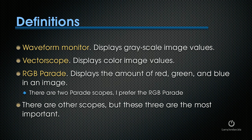There are three principal scopes inside Premiere: the waveform monitor, the vectorscope, and the RGB parade. The waveform monitor displays grayscale image values. The vectorscope displays color image values. In order to accurately analyze a clip, we need both the waveform monitor and the vectorscope, because one shows us the grayscale — the luma value — and the other shows us the chroma, or color value. The RGB parade displays the amount of red, green, and blue in an image. There's also the YCrCb parade, which displays grayscale with color values, but I prefer the RGB parade. These are the three most important scopes for what we're doing today.